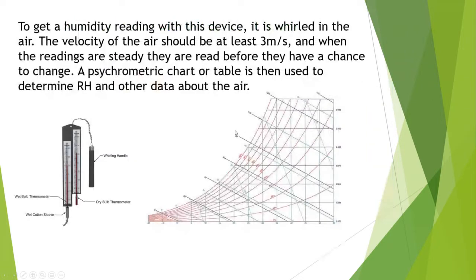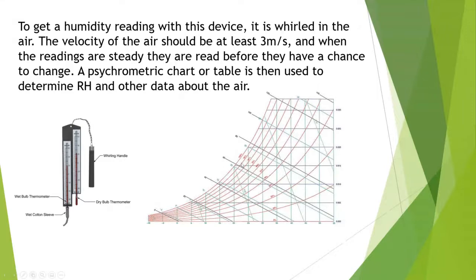To get a humidity reading, you swing the sling psychrometer through the air — the velocity should be at least three meters per second. When the readings are steady, you quickly read them. Then you apply the wet bulb and dry bulb temperatures to a psychrometric chart. The key insight: the higher the relative humidity, the less temperature difference between wet and dry bulbs; the lower the relative humidity, the greater the temperature difference. The water on the wet sock turning from liquid to vapor is called latent heat of vaporization.